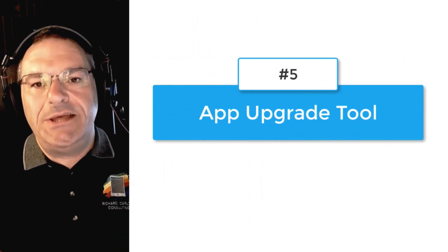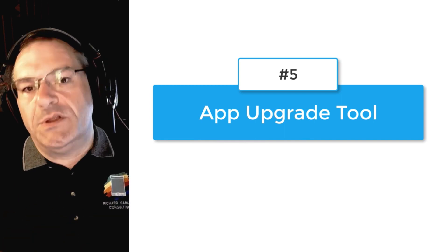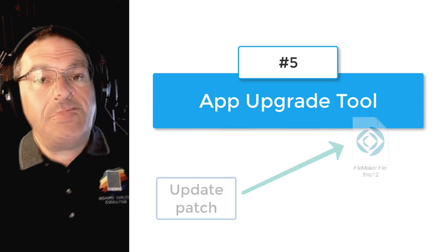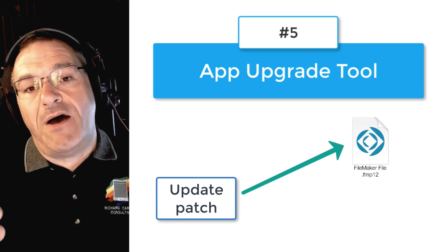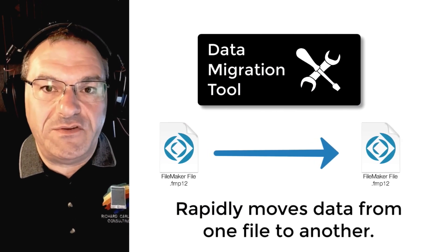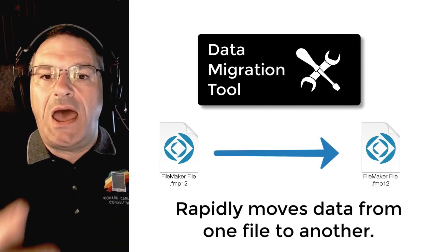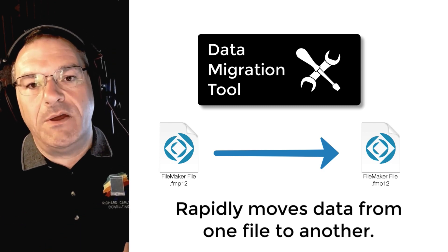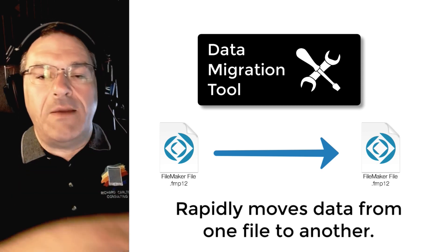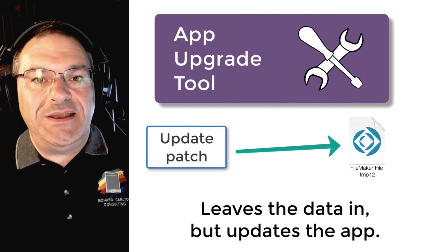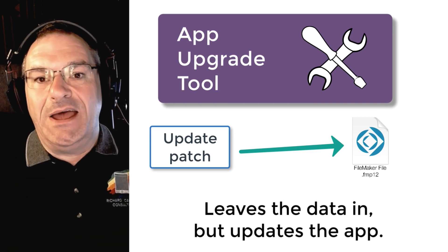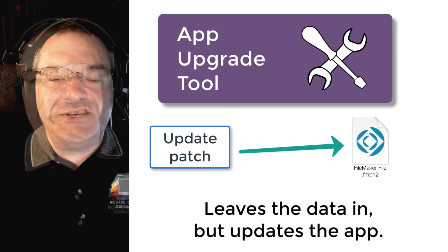Number five on our list is also huge, and it's a preview release. The documentation is just now starting to come out, and we're starting to learn about this capability: the ability to create patcher or update files where you can patch a FileMaker custom application. Starting with FileMaker 17, we have the data migration tool, which allows us to rapidly move gigabytes of data from one FileMaker file to a newer updated version. That command line tool was a bulk data mover at high speed. Now in 19, instead of moving data from an old file to a new file, we leave the data in place and apply updates and patches to that existing file.